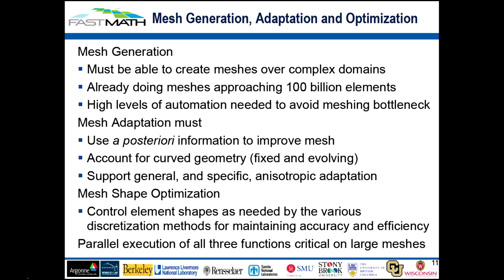On mesh generation: we must be able to generate meshes on totally general domains. We're approaching 100 billion elements and that will continue to grow. If it isn't automatic, you've got a bottleneck. Our emphasis is on fully automated techniques to the greatest possible extent. Mesh adaptation must use various forms of a-posteriori information to improve the mesh — be it discretization error control, evolving geometry, mesh deformation, or tracking particles requiring a finer mesh. We have examples of all those types.